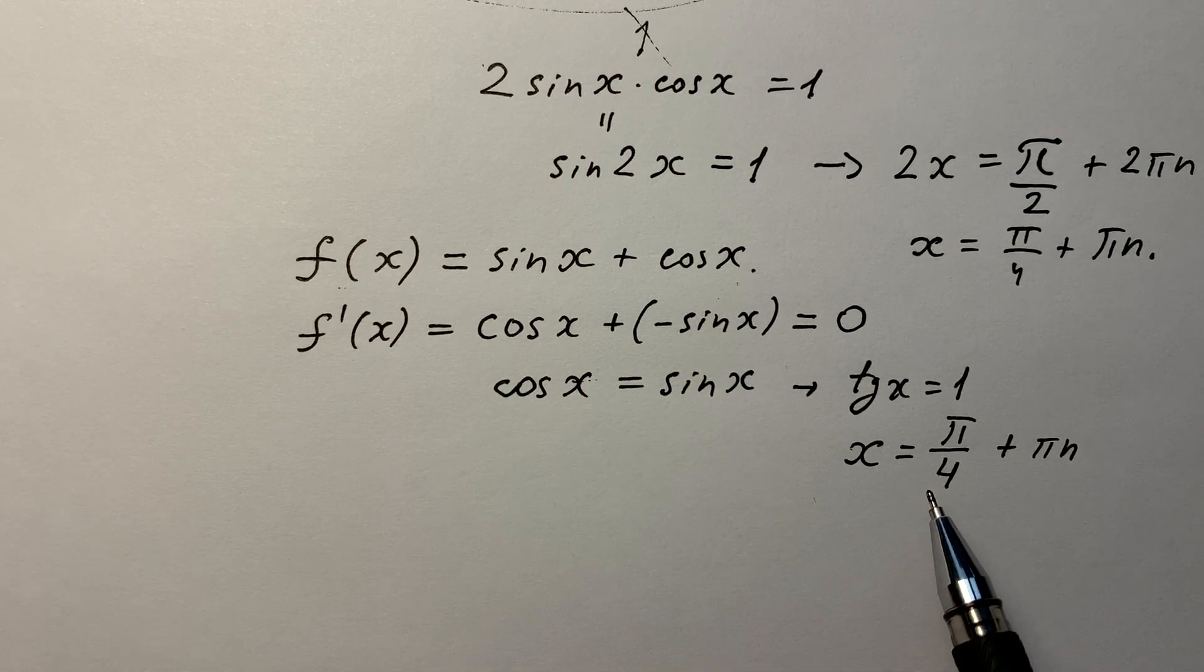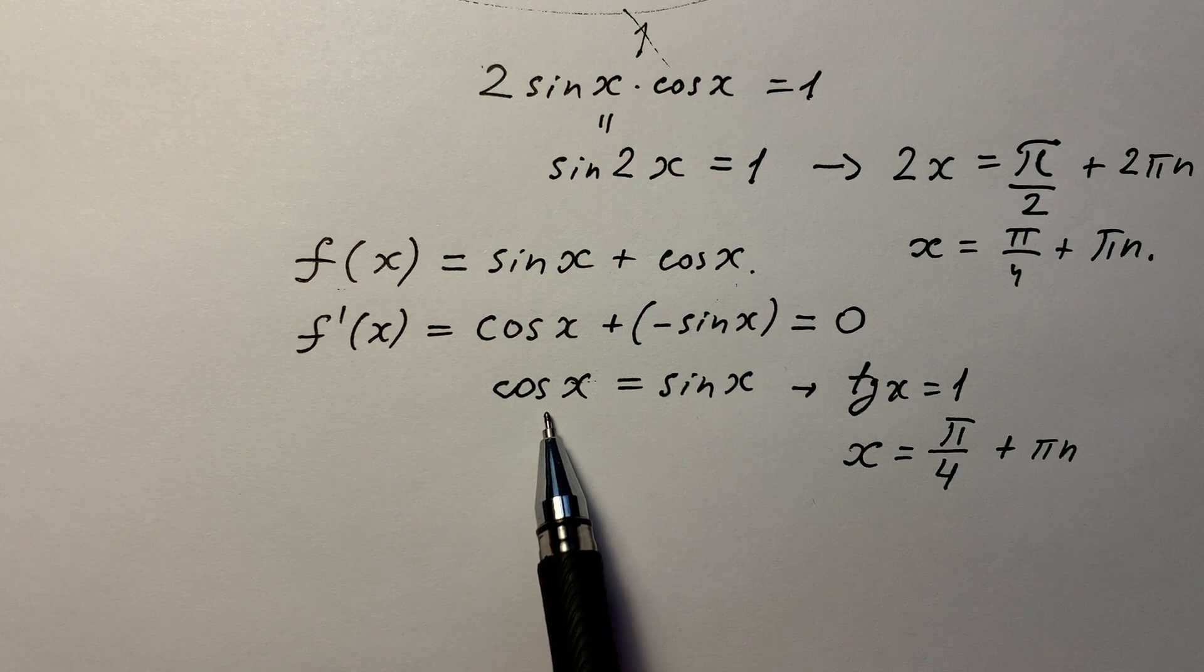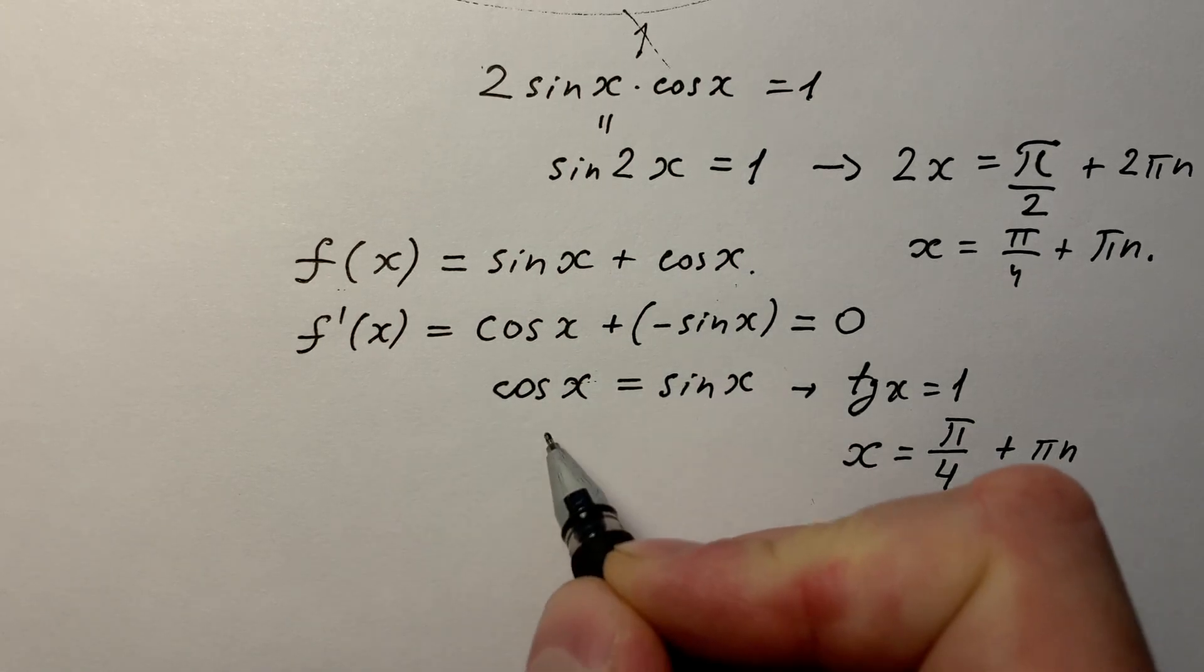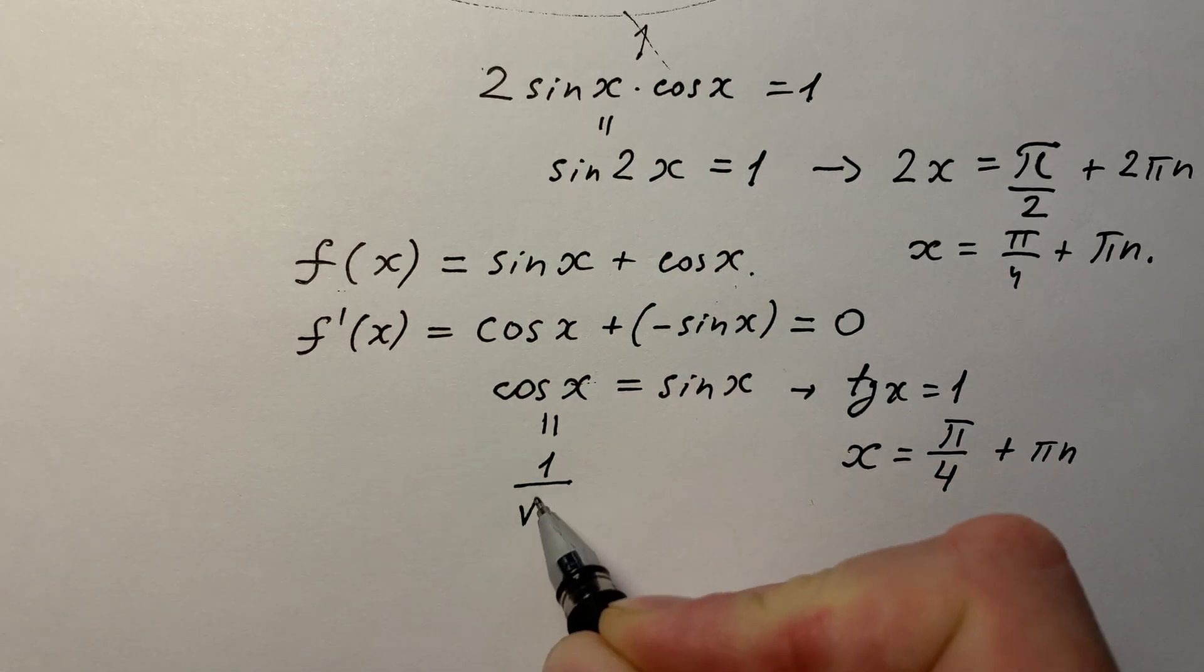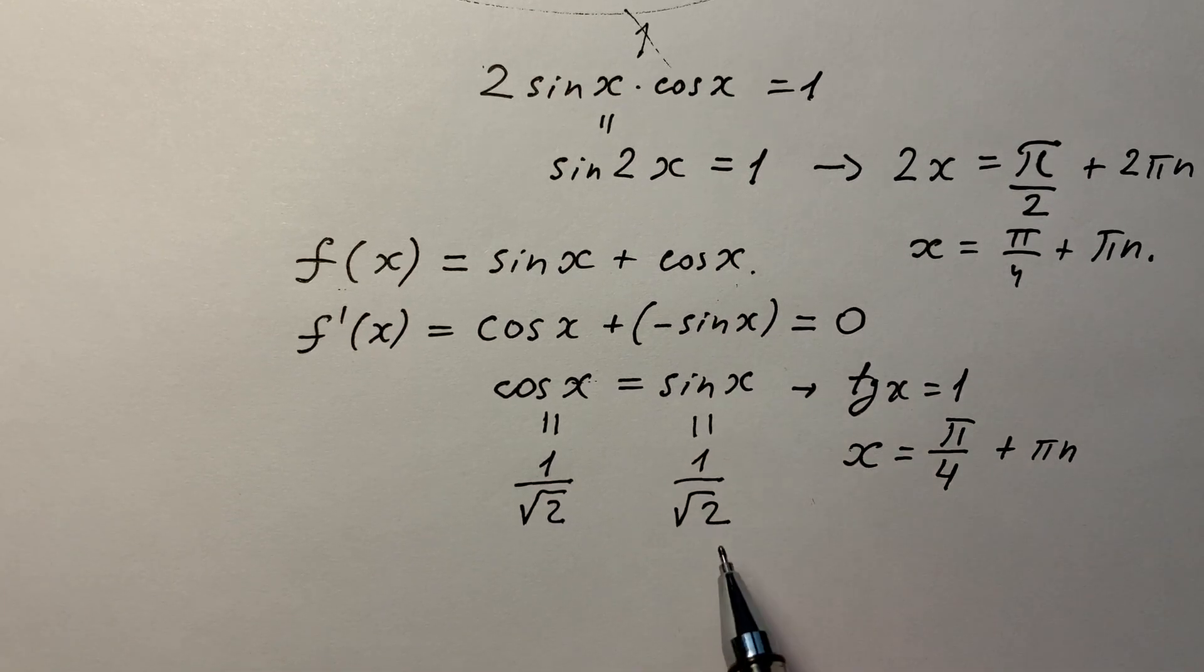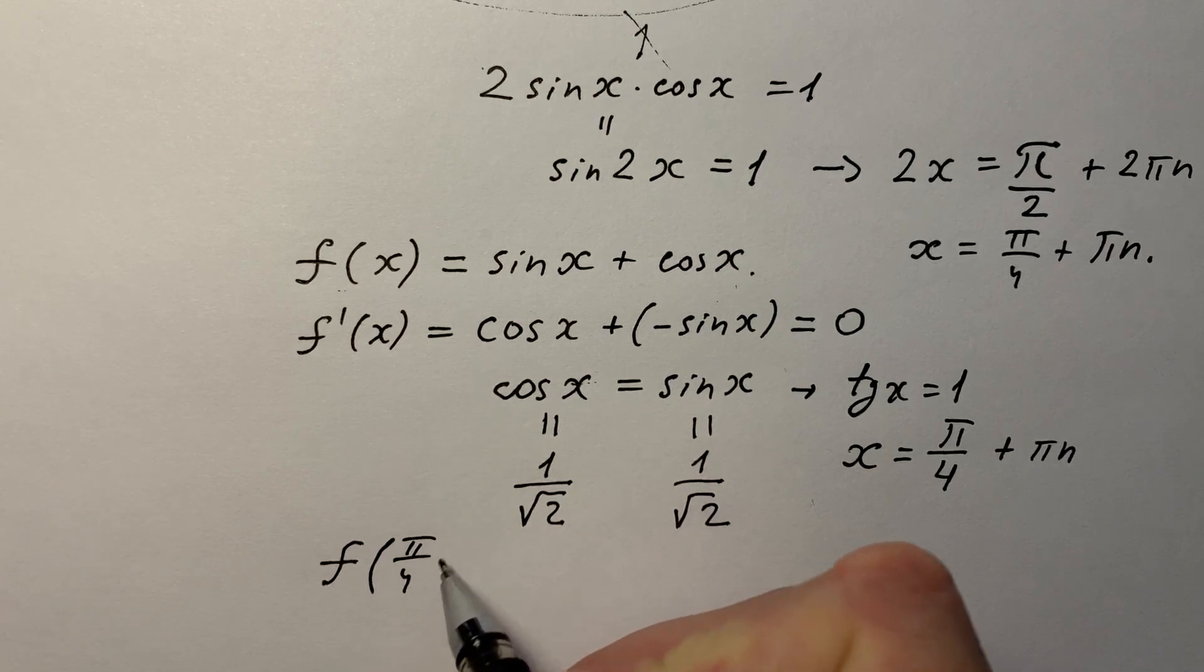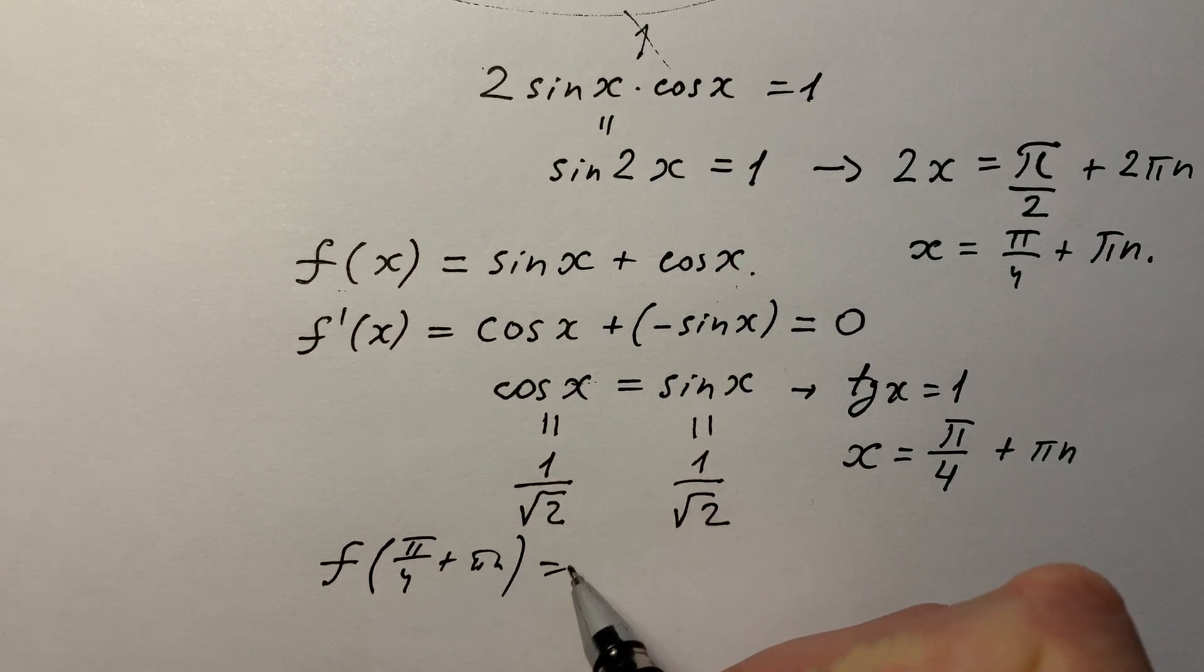In this point, sine and cosine are equal and they are both equal to 1/√2. Of course, 1/√2. So the function has a maximum value at π/4 + πn, and it equals √2.